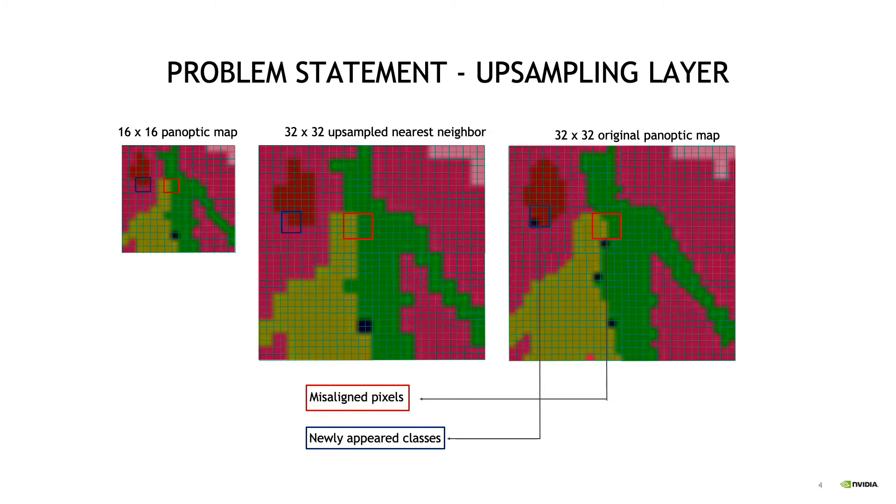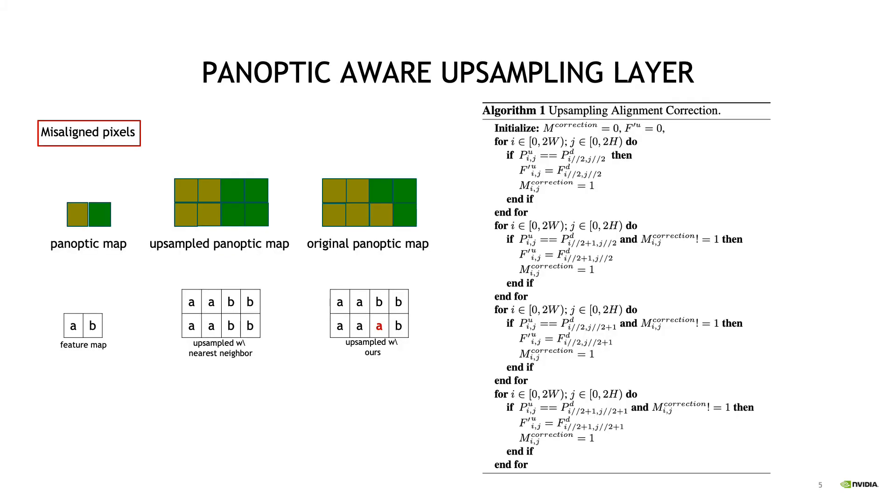In upsampling layers, we want to align the upsampled features and high-resolution panoptic maps better than traditional upsampling methods. For misaligned pixels, we propose a simple alignment correction algorithm where we scan the four neighbors of each pixel to find the correct panoptic identity.